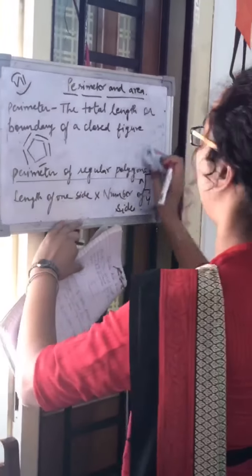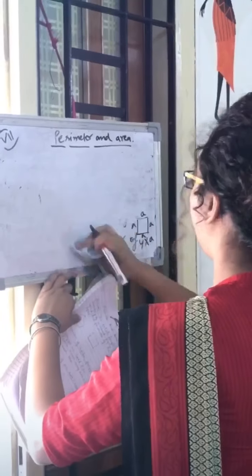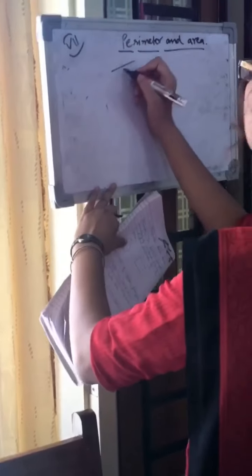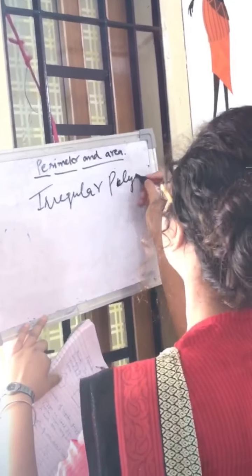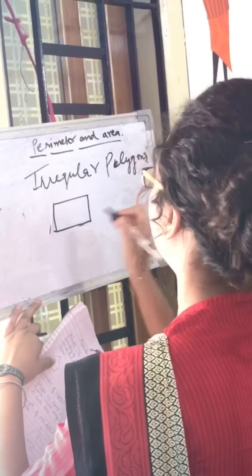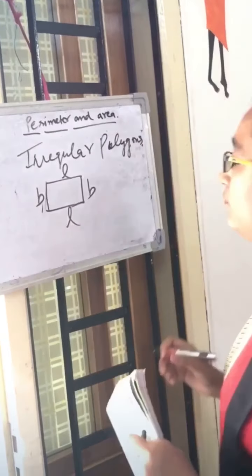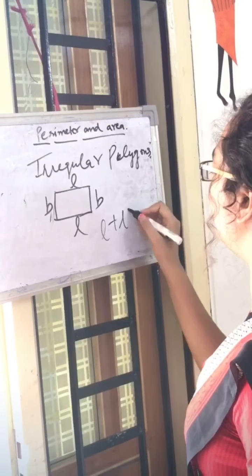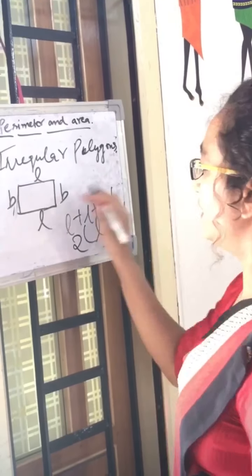Now we will be learning about the perimeter of irregular polygons. Irregular means the lengths of the sides will not be equal to each other. For example, this is a rectangle: this side is L, this side is L, this side is B, and this side is B. When we have to find the perimeter of this irregular polygon, we add L + L + B + B, which gives us 2(L + B). This will be the formula.